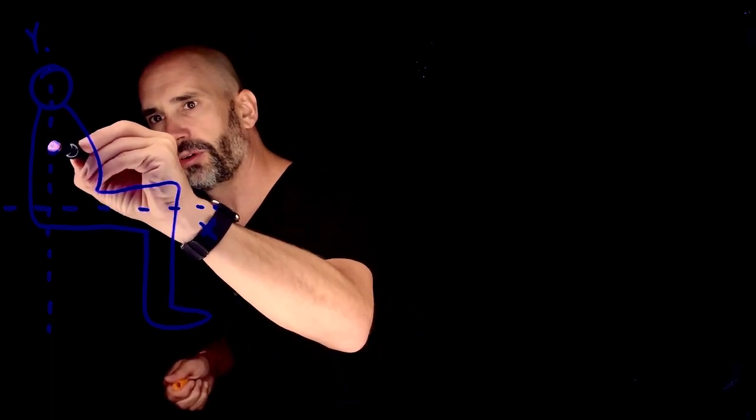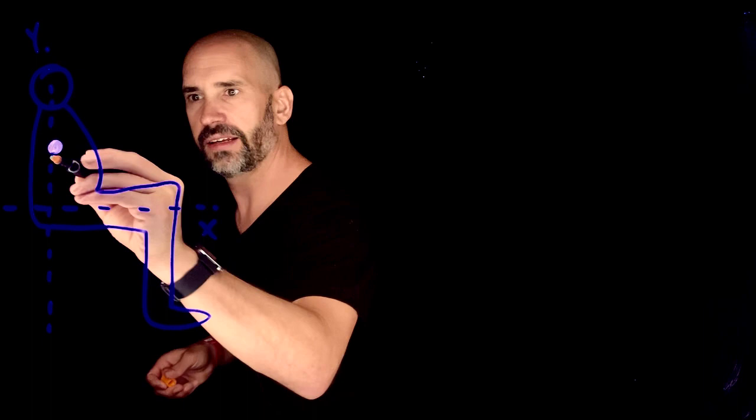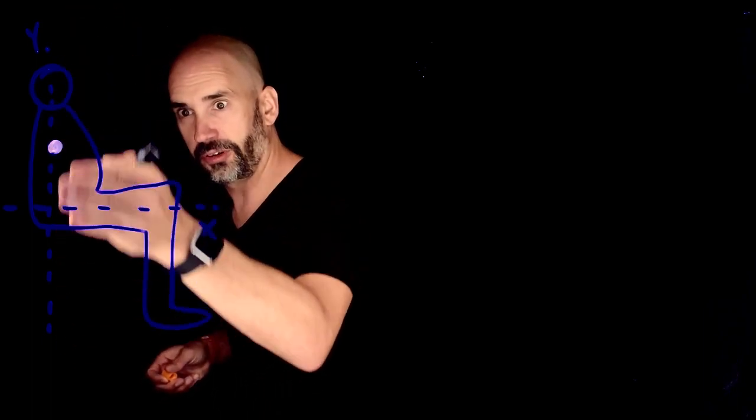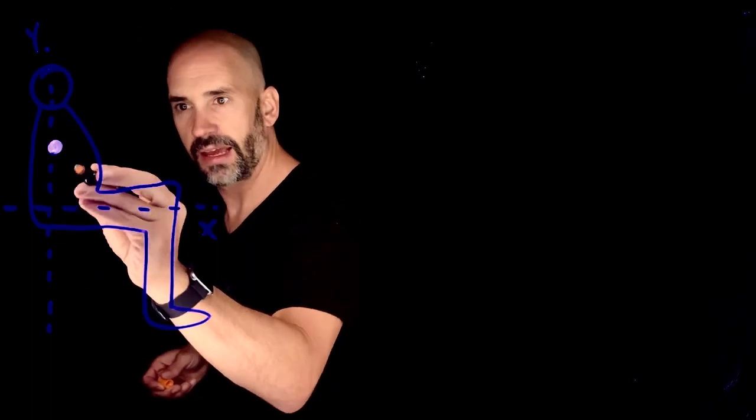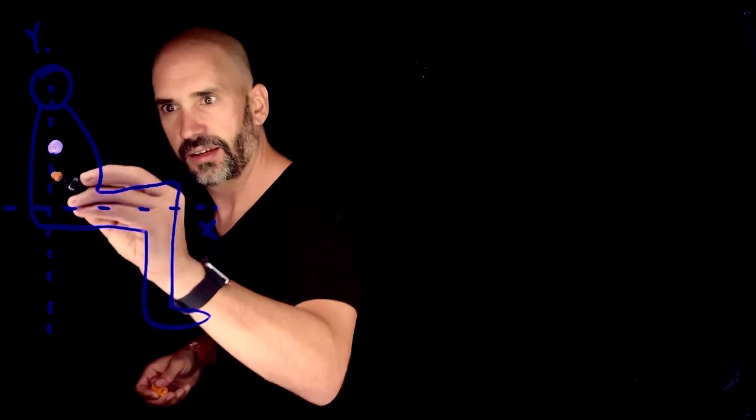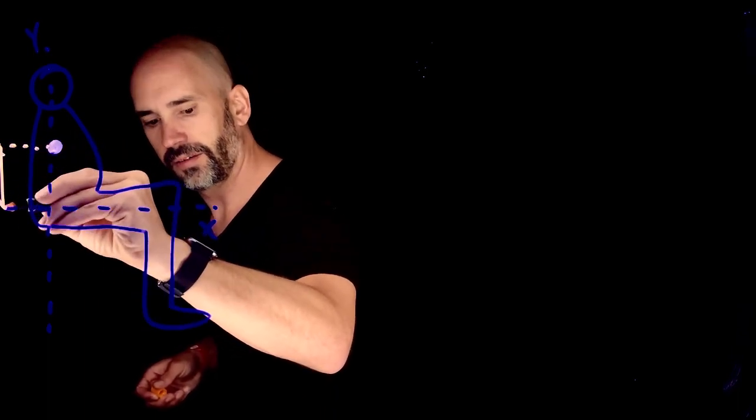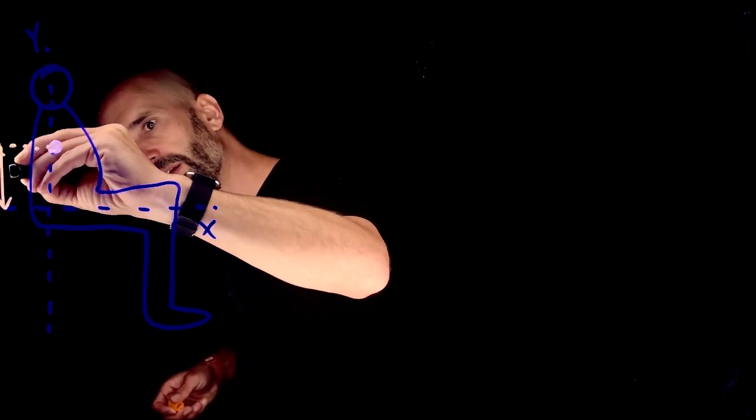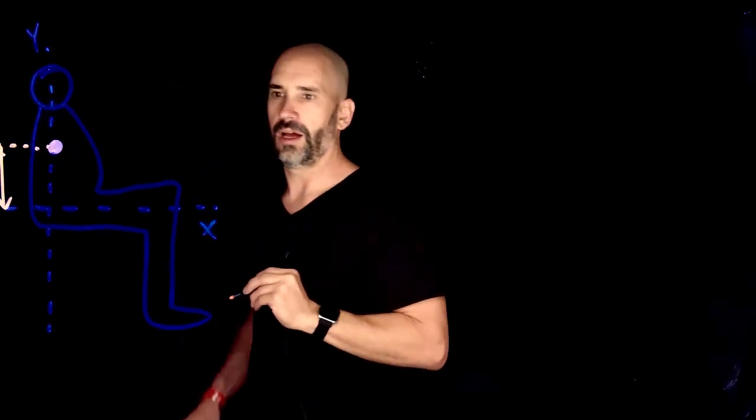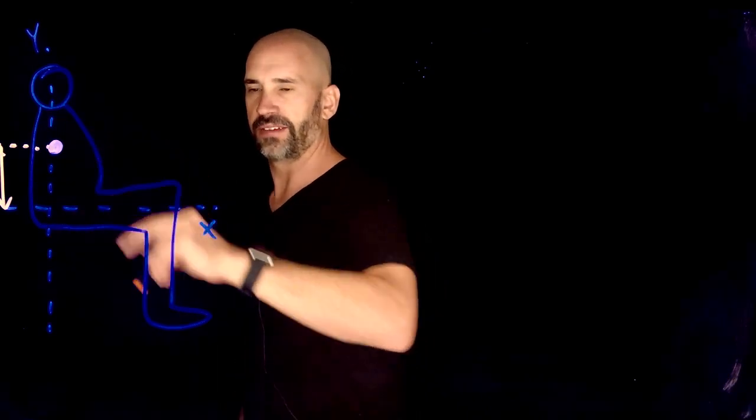We're just going to do this by approximating the center of mass of the torso, which is right here. So here's the torso. And it is on the x equals 0 axis or the y axis, and it is a distance of 0.39 meters up. So that's the center of mass of the torso.